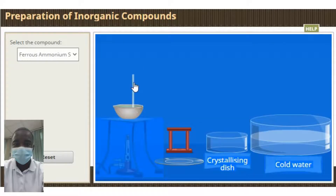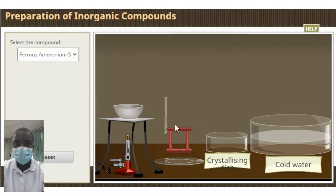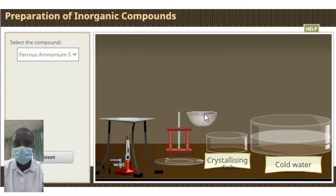A double salt is a compound formed when two different salts chemically combine. The term double salt can refer to either a single substance or a mixture of two products. Double salts are not as common as other types of chemical compounds, but they do have some important uses.